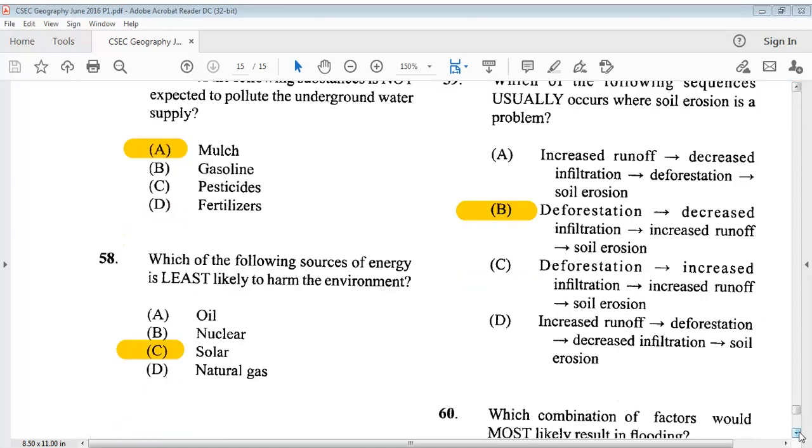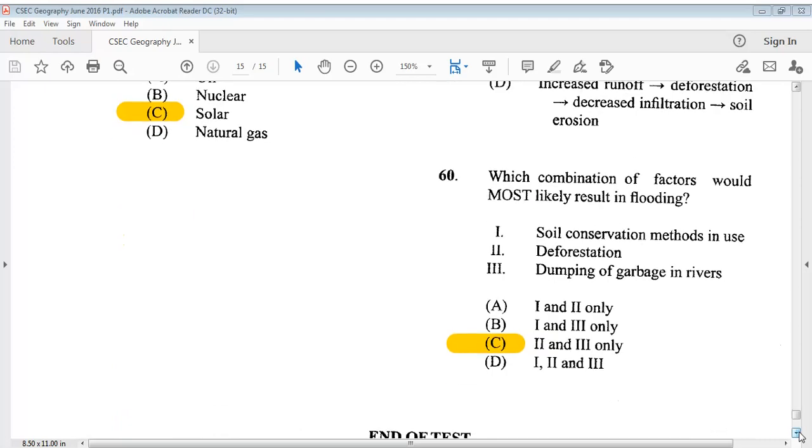Question 60 says, which combination of factors would most likely result in flooding? 1, soil conservation methods in use. 2, deforestation. 3, dumping of garbage in rivers. The answer is C, 2 and 3 only. So that is it. We have come to the end of the CSEC Geography May June 2016 Paper 1.